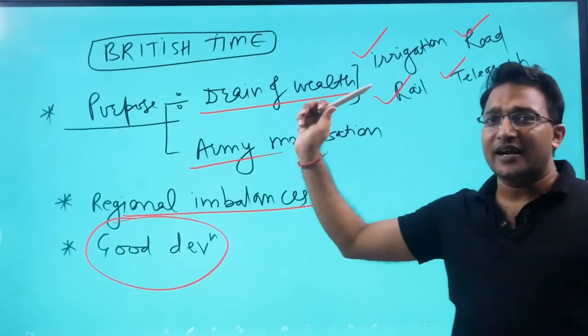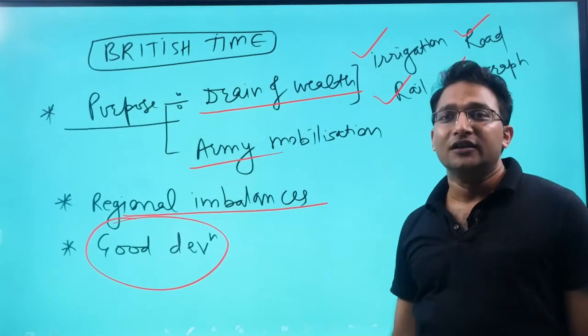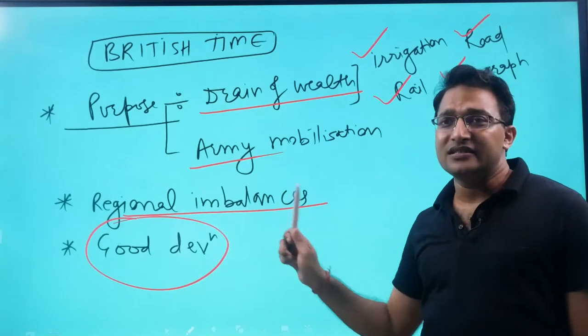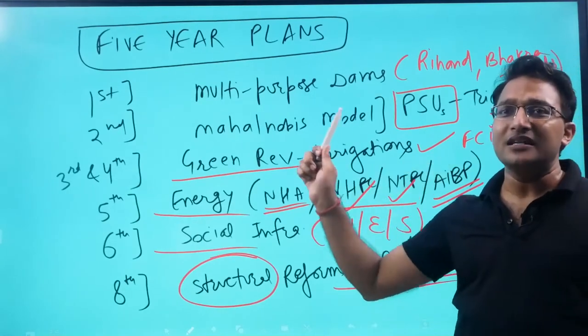In British times, the primary focus of infrastructure was the drain of wealth and army mobilization. There were regional imbalances but good development of infrastructure. In the first five-year plan, multi-purpose dams were developed.